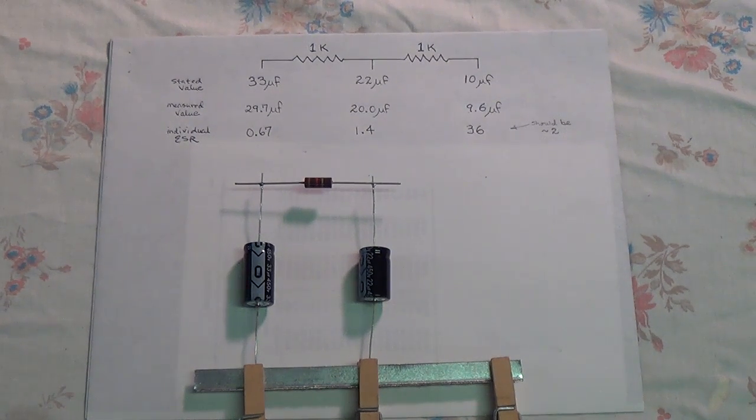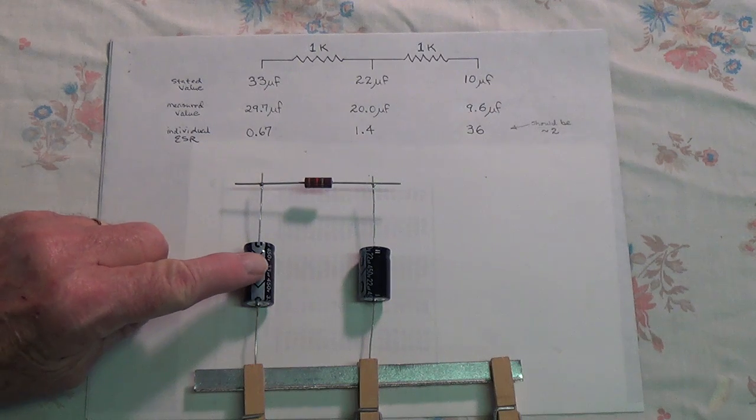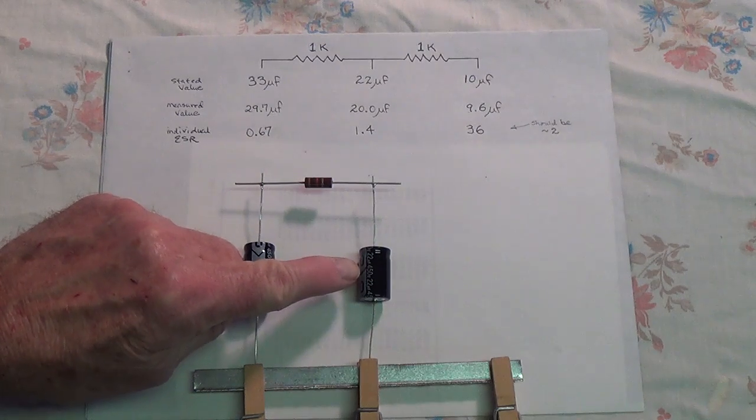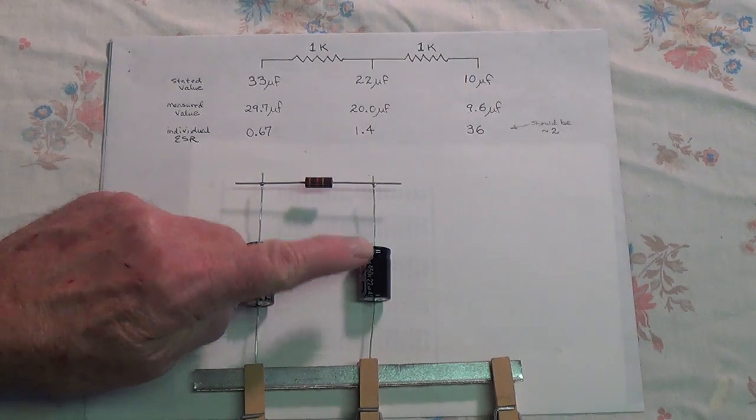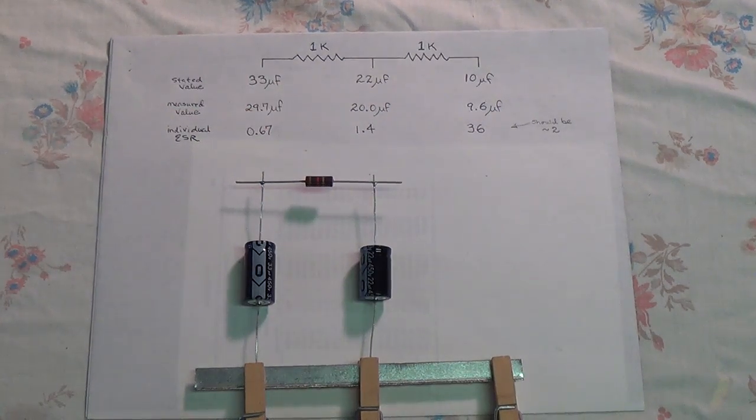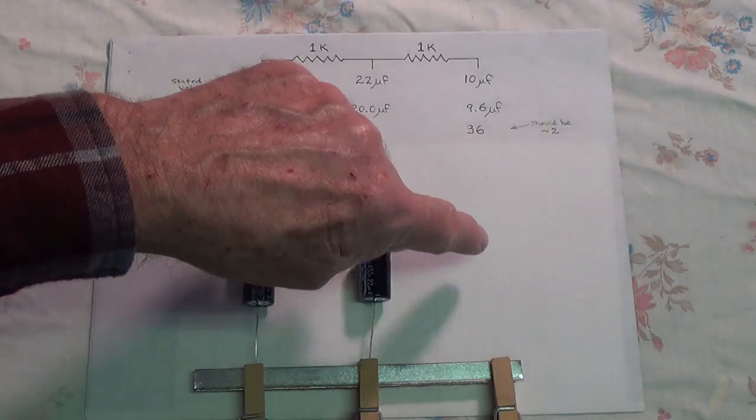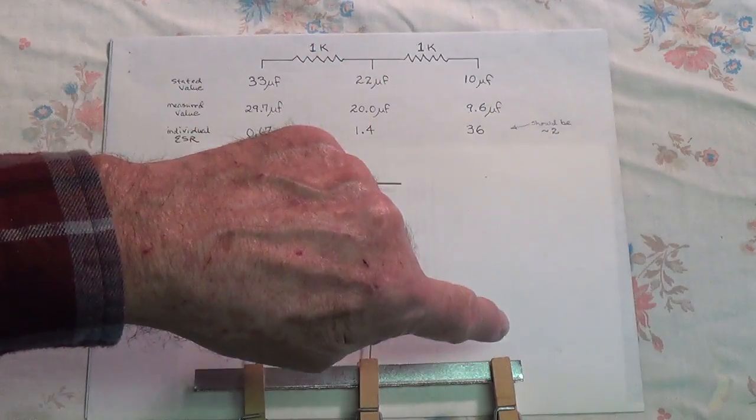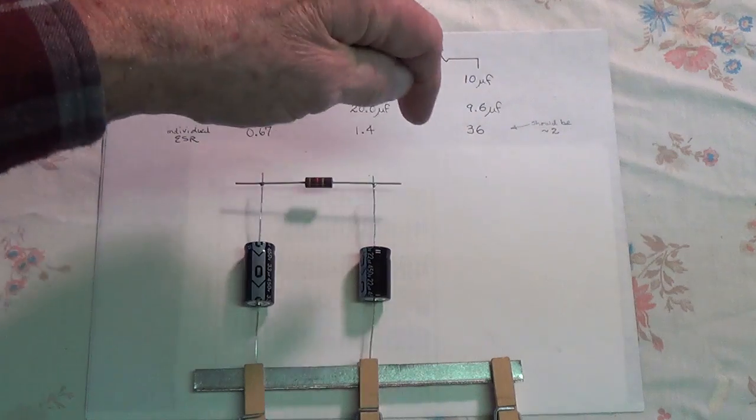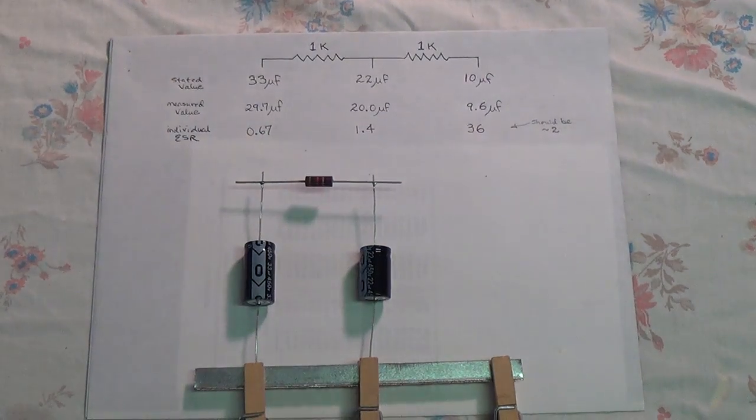What you see here is just a portion of my very elaborate and sophisticated experimental setup. It consists at this point of a 33 microfarad at 450 electrolytic capacitor, a 22 microfarad at 450 electrolytic, and they are linked together by a 1000 ohm resistor. In a second we're going to add a third and very faulty electrolytic capacitor over here and connect it with the 1000 ohm resistor.